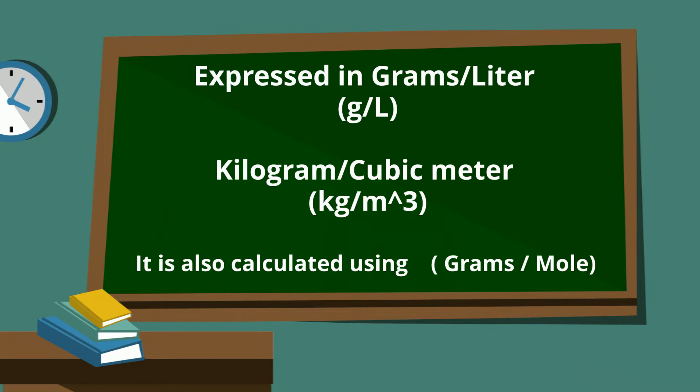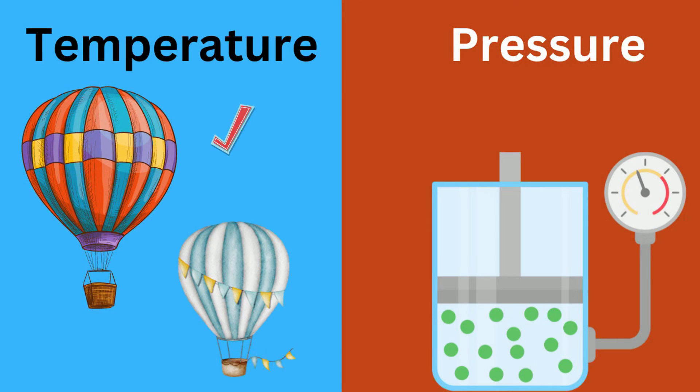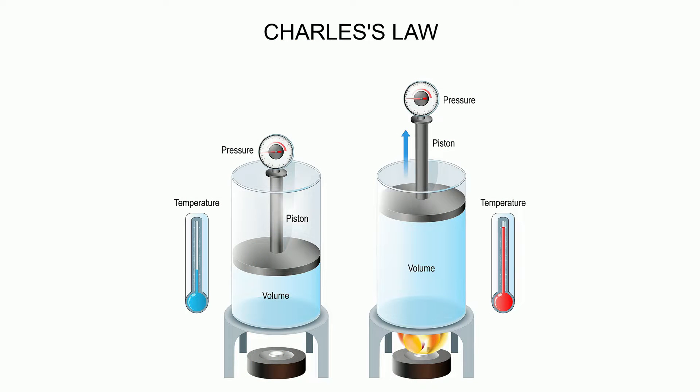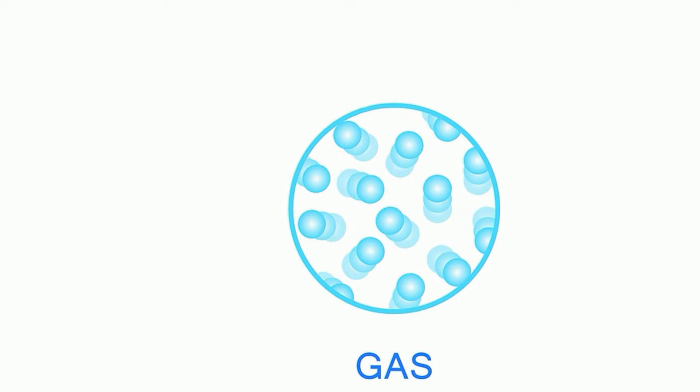The density of a gas is affected by its temperature and pressure. According to Charles Law, the temperature of a gas is directly proportional to its volume. As the temperature increases, its molecules move faster and have more space between them. This causes the gas to expand.